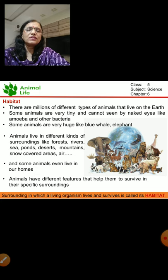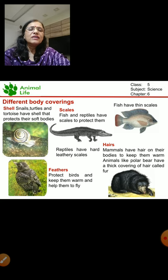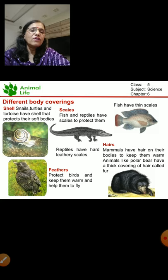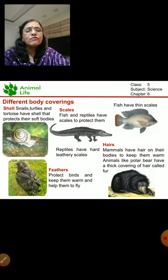There are different body coverings like shells - snails and turtles have hard shells that protect their soft bodies. Scales are found on fish - fish have thin scales while reptiles have leathery scales. Hair is found on mammals, like polar bears which have a thick covering of fur to protect the body in cold climate. Birds have feathers that keep them warm and also help them to fly.